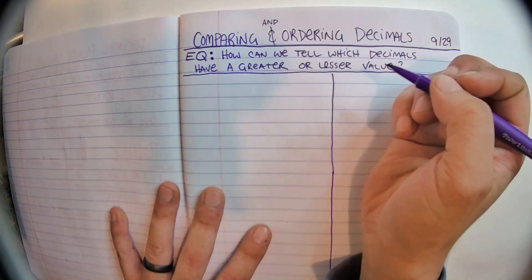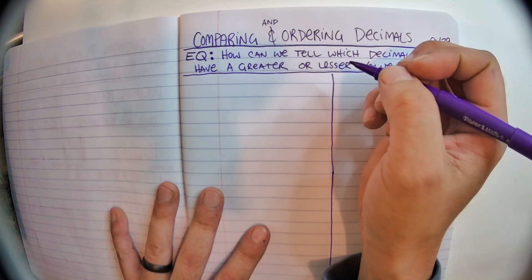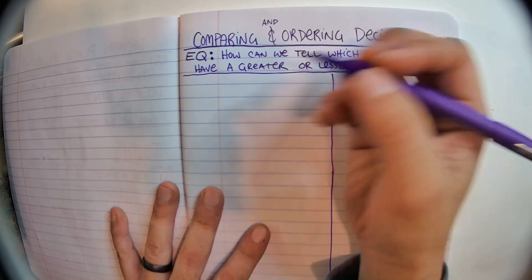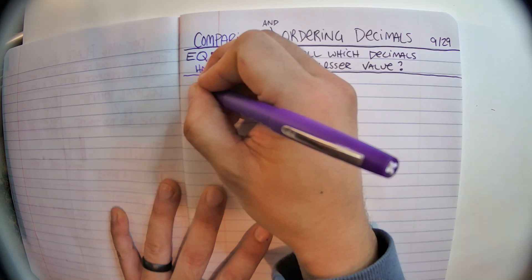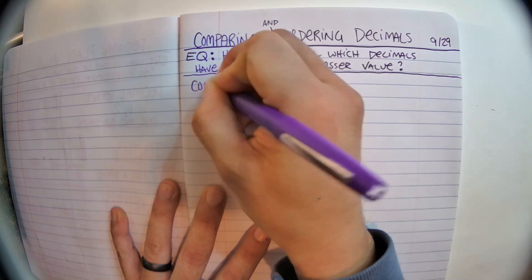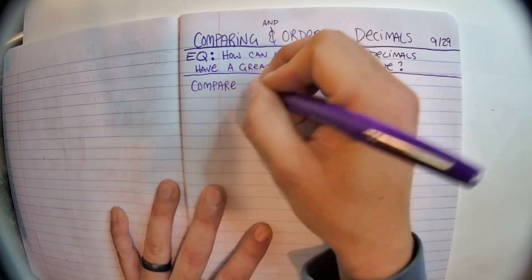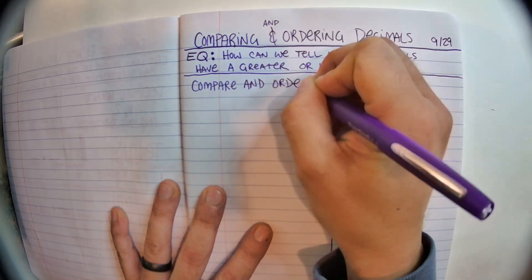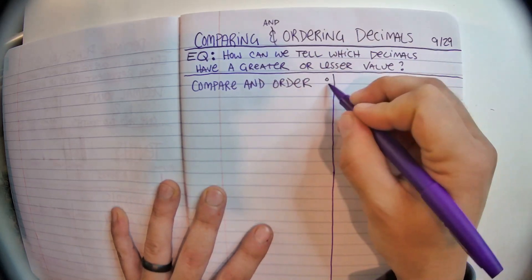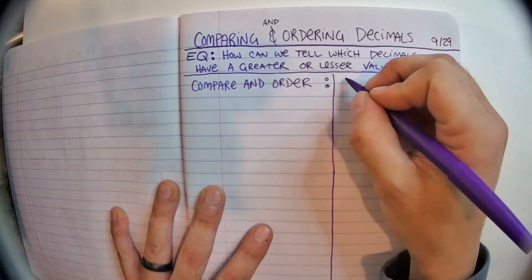So to compare and order decimals, what we want to do, let's give ourselves a set of decimals to compare. So what we're going to do is we're going to compare and order these three numbers.